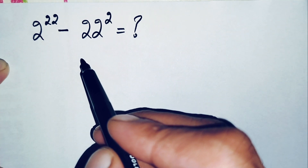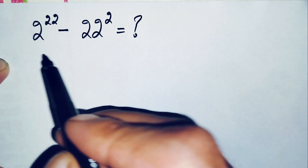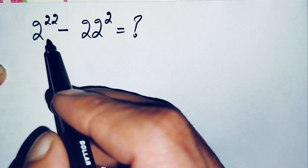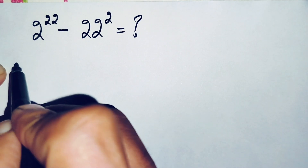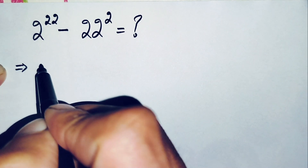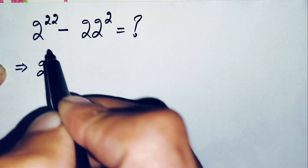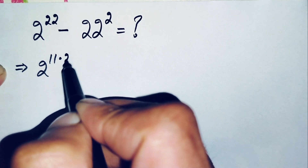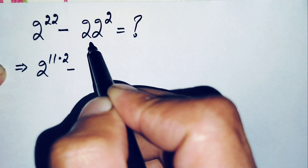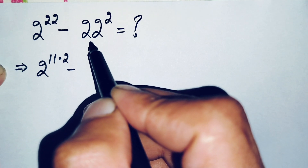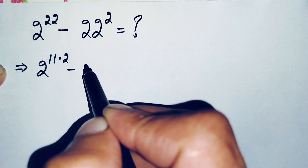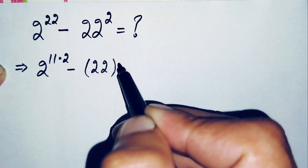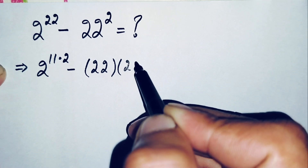How can we solve this math problem? First of all, we will factorize the power. We write 22 as 11 times 2, so 2 raised to power 22 becomes 2 raised to power 11 times 2. And 22 squared means 22 times 22.